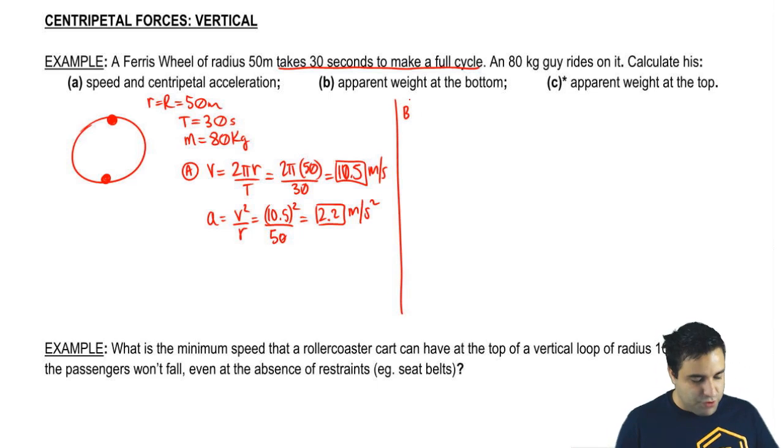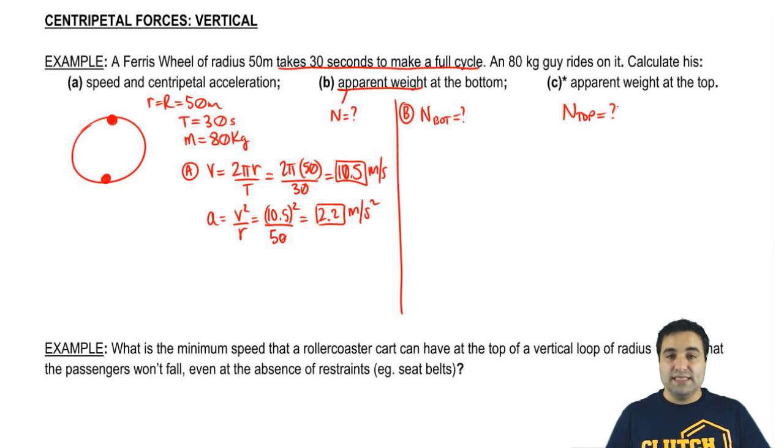This is what's actually new here. I want to know his apparent weight at the bottom. Apparent weight, remember, is just what is the normal force acting on him in the bottom. So for part b, I want to know what is N bottom. And for part c, I want to know what is N top, the normal force acting on him when he's at the top.